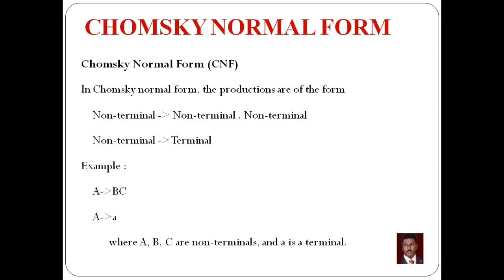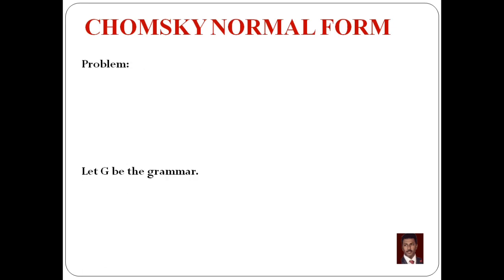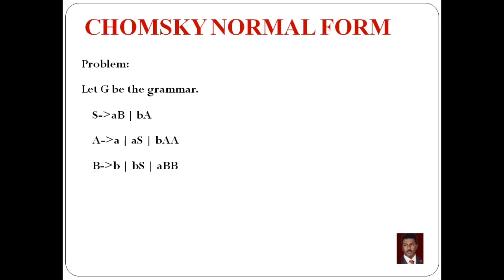Let's go to an example. In the productions, capital A, B, C are non-terminals and small letters are terminals. Consider the grammar: S tends to AB slash BA, A tends to a slash AS slash BAA, B tends to b slash BS slash ABB. This is a university question.